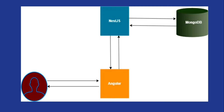Once the NestJS API receives the request, based on the request, the controller and action methods — which are nothing but a class and functions inside our API — get executed. This API will then invoke MongoDB or any kind of database for fetching the data, because the API itself cannot store data.